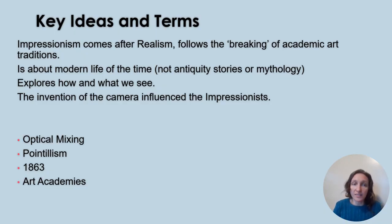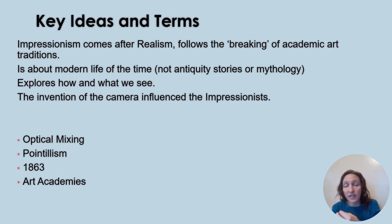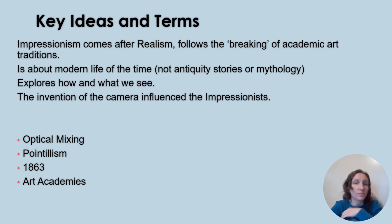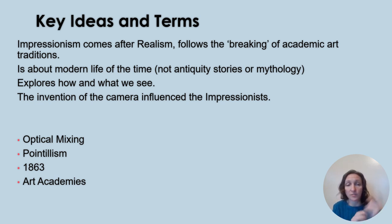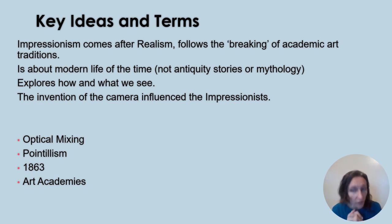Key terms and ideas: Impressionism comes after realism, following the breaking of academic traditions that the salon and academies established. It is about modern life of the time — not some story from Greek or Roman mythology with iconography, because that's not what Impressionism was about. It explores how we see and what we see, and the invention of the camera influenced Impressionism. Remember the date 1863 — it will 100% be on the test. If you have any questions, don't hesitate to email me.